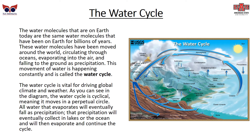The water cycle is simply that the water molecules on Earth today are the same water molecules that have been on Earth for billions of years. These water molecules have been moved around the world, circulating through oceans, evaporating in the air, and falling to the ground as precipitation. This movement of water is called the water cycle.